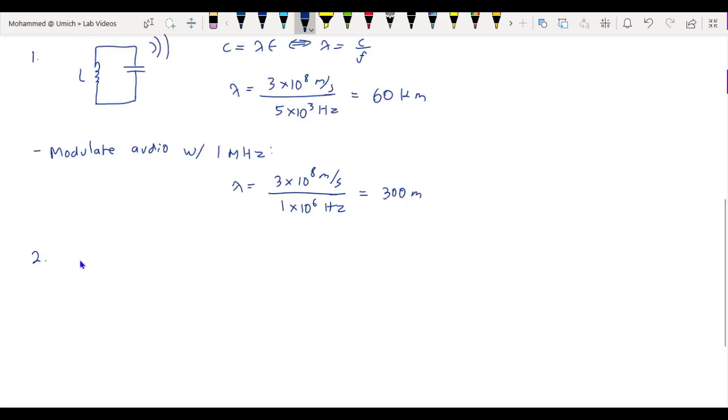Second, certain frequencies have more or less attenuation when, say, traveling through the atmosphere. And so we want to be able to change the frequency f of our radio wave so that it experiences less attenuation.